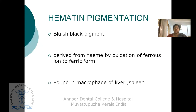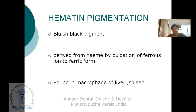Next is hematin pigmentation. This may appear as bluish-black in color and is derived from heme by oxidation of the ferrous to ferric form. These are found in macrophages of the liver and spleen.